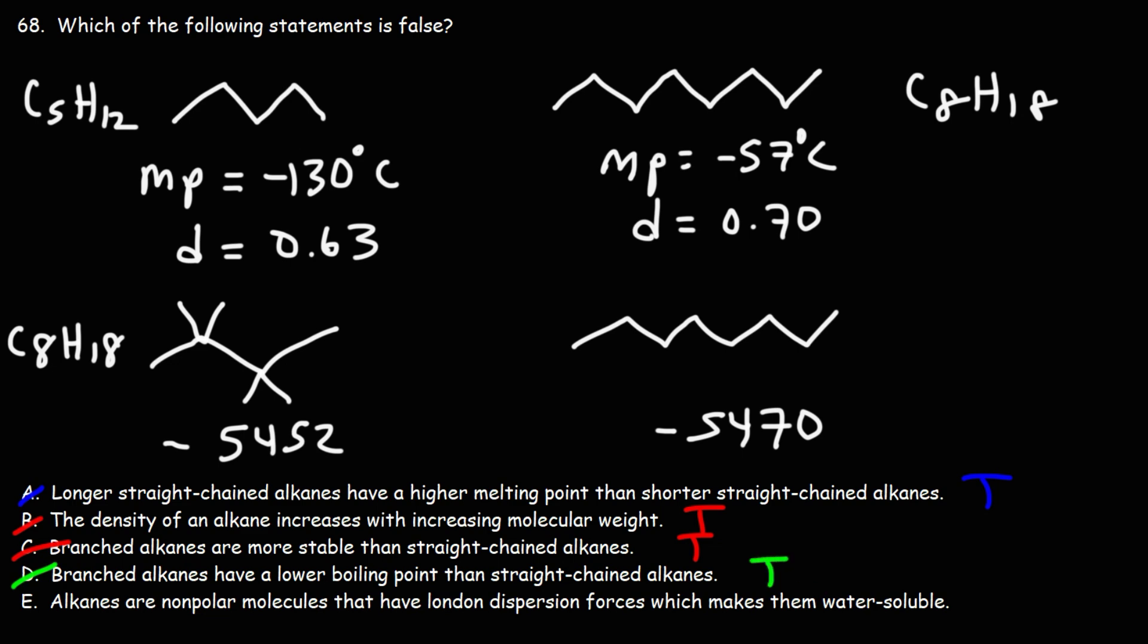When you have a branched alkane, there's going to be less area of contact between adjacent alkane molecules. And because of that less area of contact, there's less van der Waals interactions between molecules.